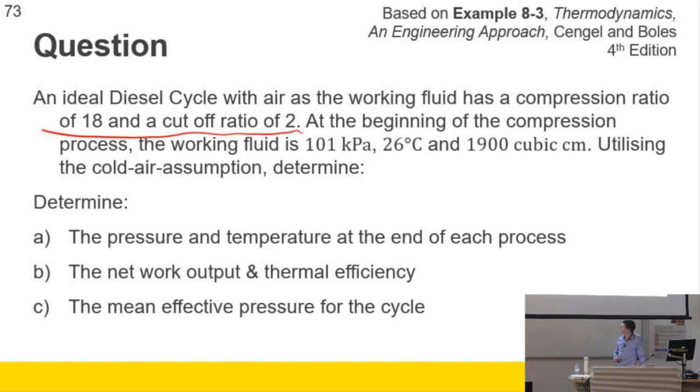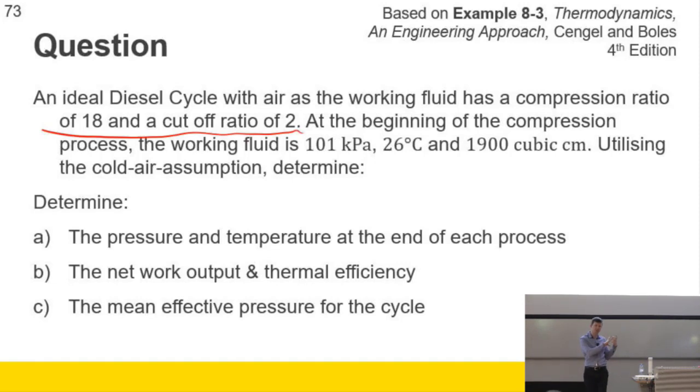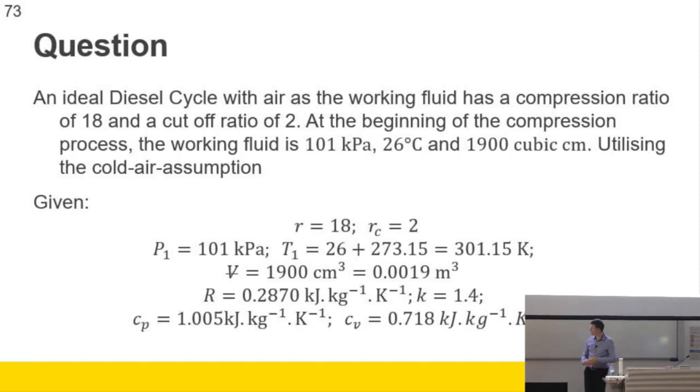An ideal diesel cycle with air as the working fluid. Compression ratio of 18, cut-off ratio of 2. We're given a volume, utilize the cold air assumption, so we're going to say that all the properties for air are as they are at 300 Kelvin. Determine pressure and temperature at the end of each process, network and mean effective pressure. So that's our goals. I talked about having a cycle solution path. Does anyone remember what the first thing we do if we're presented with a problem is? Drop a table, put in the known values.